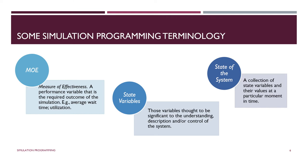MOE stands for Measure of Effectiveness — it's a performance measure, a performance criterion. It's the metric you use to decide whether the system is a success, what you're optimizing. It could be how long entities have to wait for service, or the utilization of the system. State variables are variables that describe the state of the system; one typical state variable is the number of entities in the system at any one time.